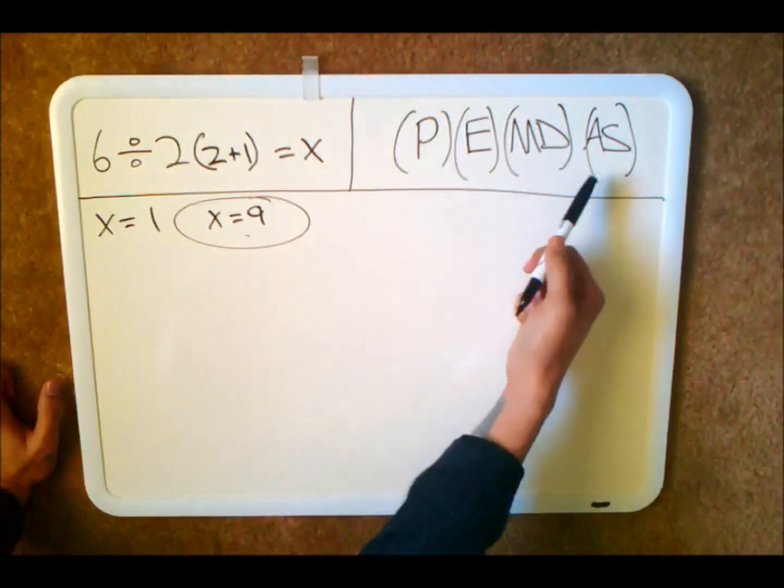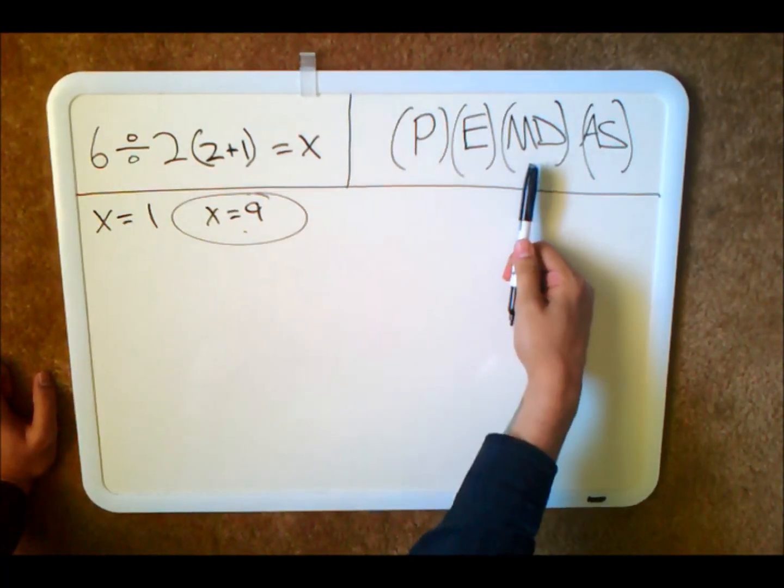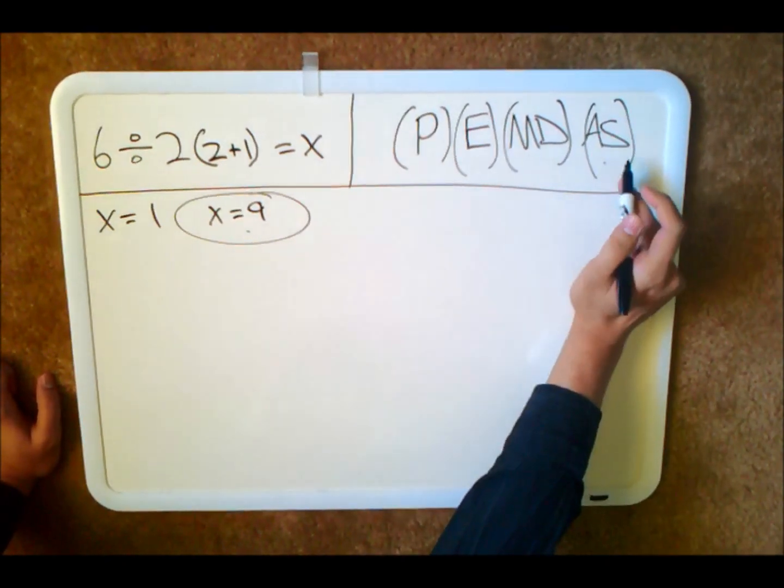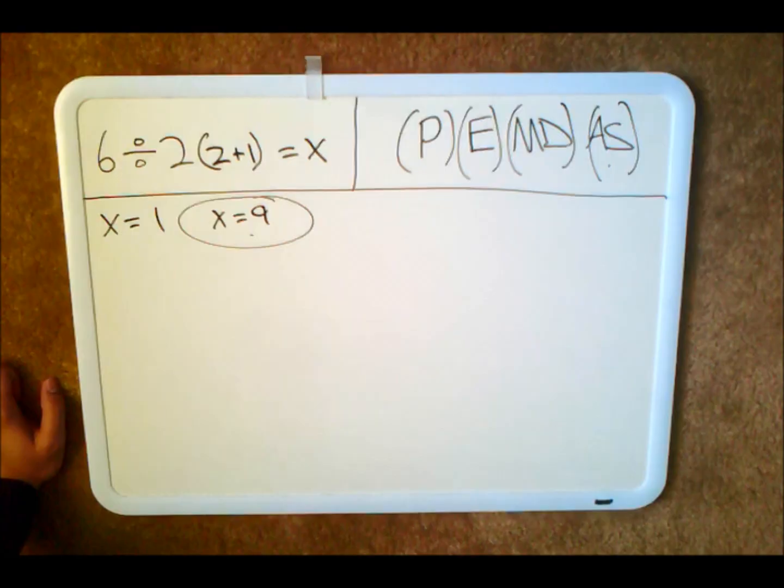First of all, the order of operations goes parenthesis, exponents, multiplication and division from whichever comes first from left to right, and addition and subtraction, whatever comes first from left to right as well.